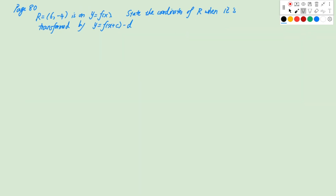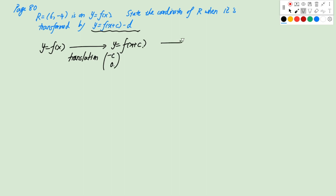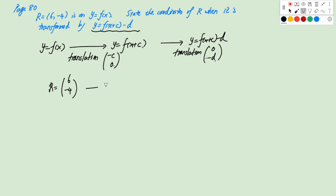Next question. We have point R on a graph, state coordinates after transformation involving c and d. y = f(x) goes to y = f(x+c), a translation by (-c, 0). Then to y = f(x+c) - d, a translation by (0, -d). R = (6, -4). After first translation: (6-c, -4). After second translation: (6-c, -4-d). So the final coordinates are (6-c, -4-d).